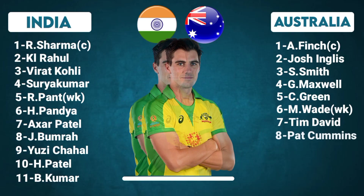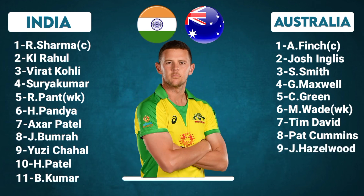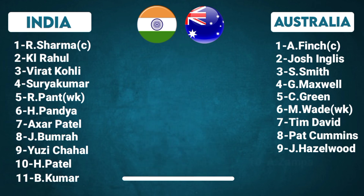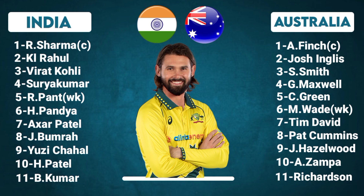Australia Team Bowlers — Number 8: Pat Cummins, Right-Arm Fast Bowler. Number 9: Josh Hazlewood, Right-Arm Fast Bowler. Number 10: Adam Zampa, Right-Arm Leg Spinner. Number 11: Kane Richardson, Right-Arm Fast Bowler.